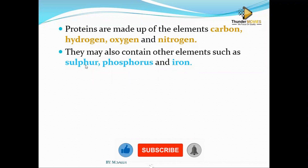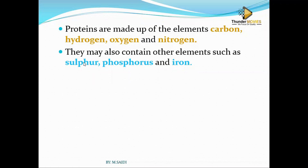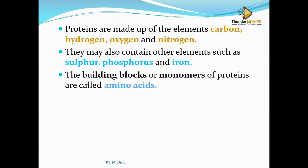A protein molecule could have sulfur, phosphorus, or iron depending on the function it is designated to do. The building blocks of proteins — the monomers — are called amino acids. You need to know what the building blocks of protein are.